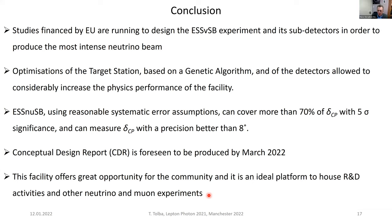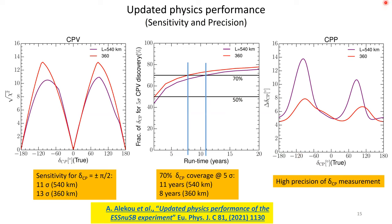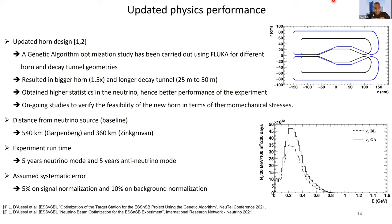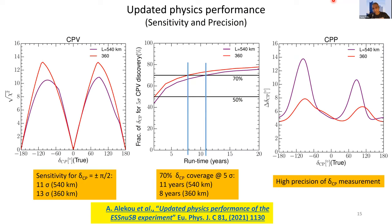Thank you very much, Tamir, for this interesting overview. Do we have questions? Nicola: Thanks for the nice talk. The sensitivity slide is very impressive. I was wondering what has been folded into the sensitivities in terms of detector systematics. Response: As I said, we put 5% systematic error on normalization and 10% on background. For the detailed systematics, I have to admit I wasn't involved in the physics simulation, so I'll have to check.